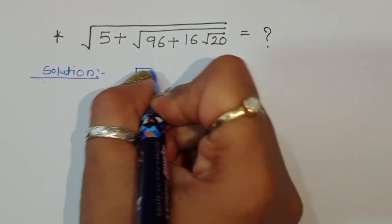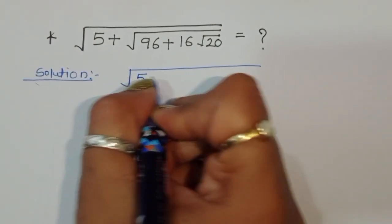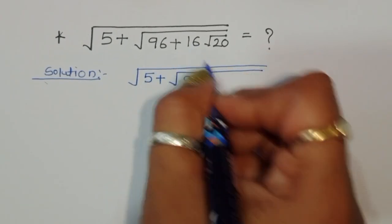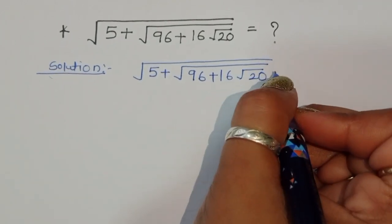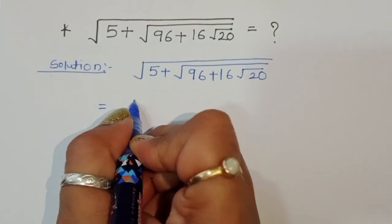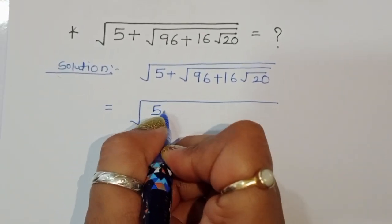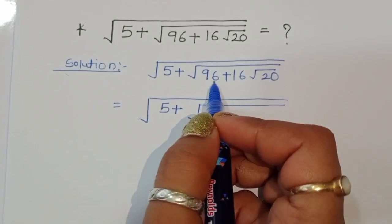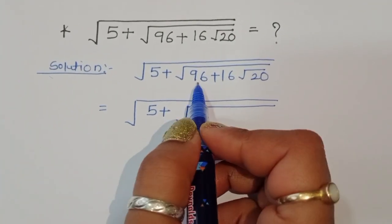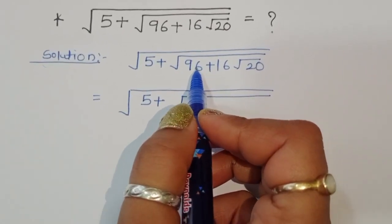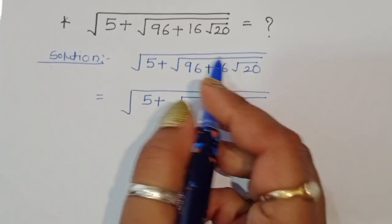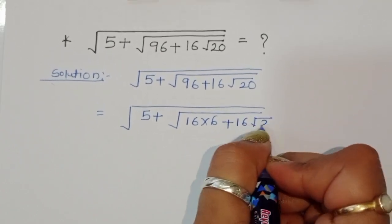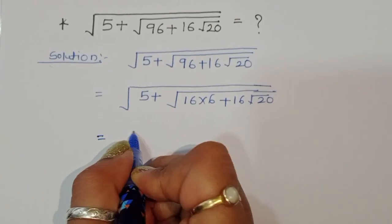We have square root of 5 plus square root of 96 plus 16 square root of 20. Now we can rewrite 96 as 16 times 6, because 16 is already present here. So we need to convert 96 into a factor of 16: 96 equals 16 times 6.